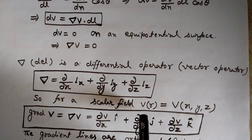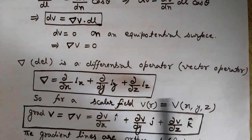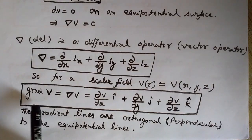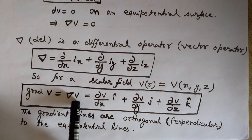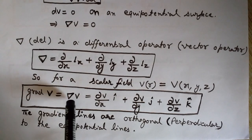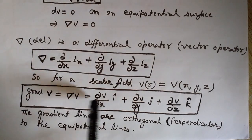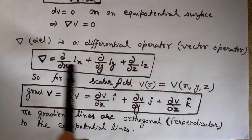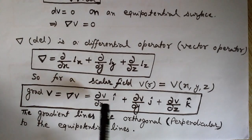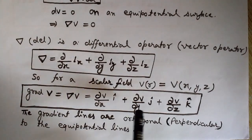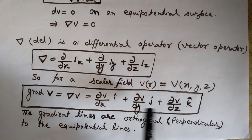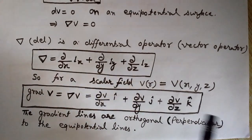For a scalar field V(r) varying in x, y, and z, gradient of V can be written by applying this del operator to V: grad V = ∂V/∂x · î + ∂V/∂y · ĵ + ∂V/∂z · k̂, where î, ĵ, and k̂ are the unit vectors in the x, y, and z directions respectively.